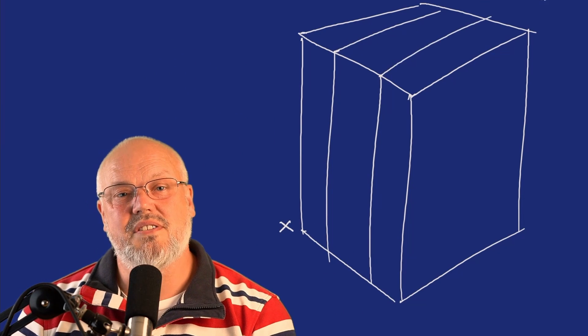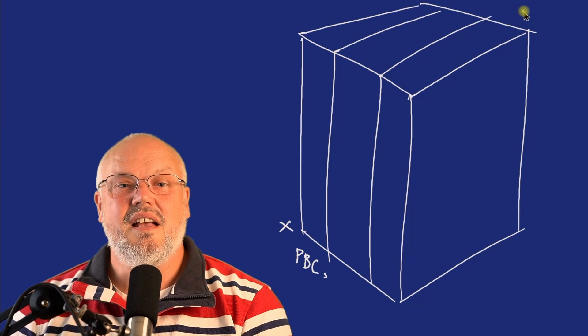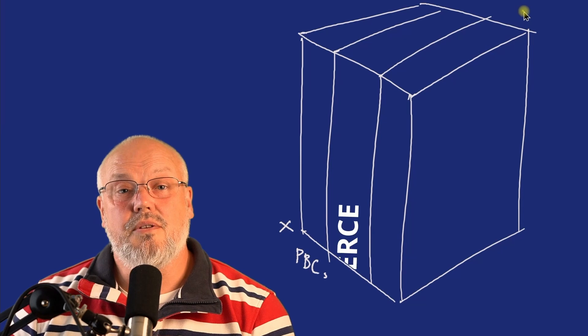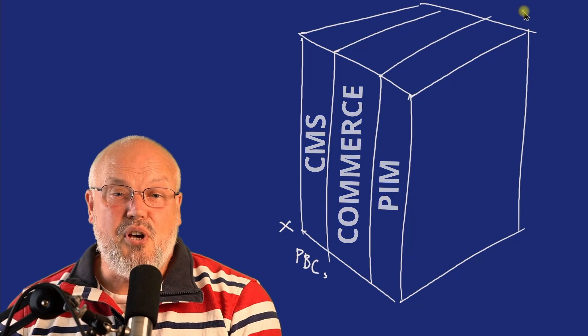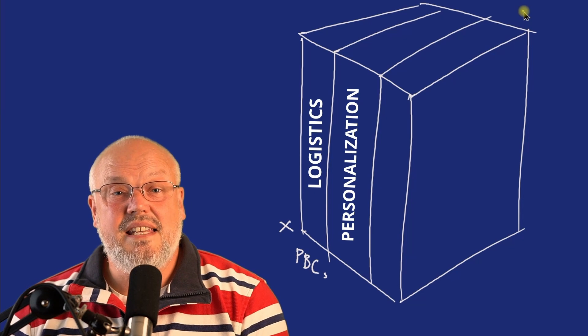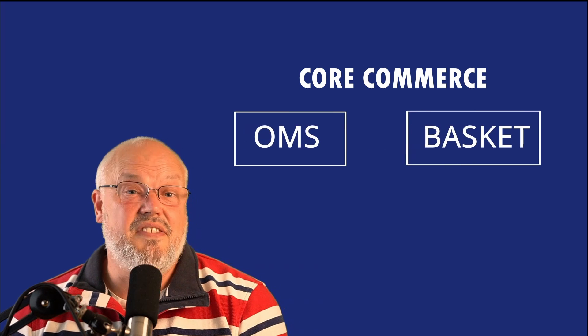In my first video I used the cube that Gartner used to describe the concept of composable commerce. The x-axis represents packaged business components — these are the functional capabilities you use to build the e-commerce platform with. These can include things like core commerce, the CMS, the PIM, personalization and logistics. In fact you could break it down even further and split core commerce into things like OMS and the basket.